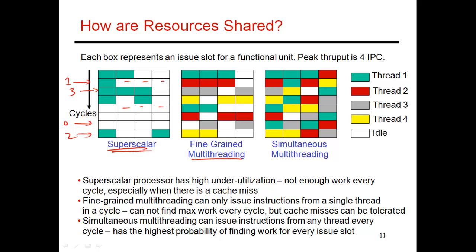There are multiple ways to do that. One is called fine-grained multithreading, where every single cycle the hardware picks one of the four threads to issue an instruction from — in the first cycle it was the green thread, second cycle the red thread, then the gray thread, and so on. And it's not very hard to go from that model to simultaneous multithreading, where every single cycle it is fair game to execute an instruction from any of the four threads. This gives you the best chance of filling all idle slots — here there are only two idle slots, because in any given cycle you can mix instructions freely, such as three green and one red, or two red, one green, one yellow.